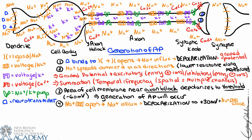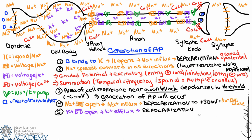Around the same time, voltage-gated potassium channels open. While the sodium channels are closing, the voltage-gated potassium channels are opening. Potassium is highly concentrated inside the cell, so we'll have potassium efflux. That potassium efflux means we're going to lose positive charges from the inside of the cell, meaning we'll go back down in membrane potential, back towards the negative. We have repolarization, generally until we get back to baseline at minus 70 millivolts.